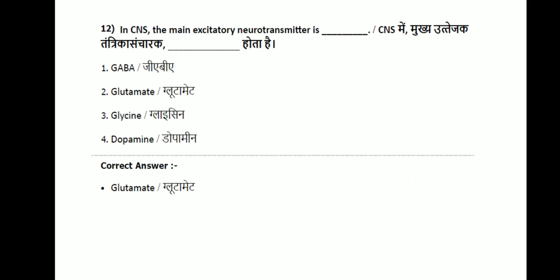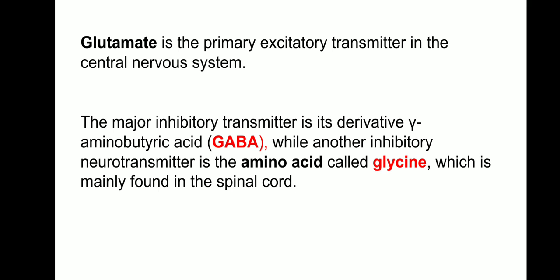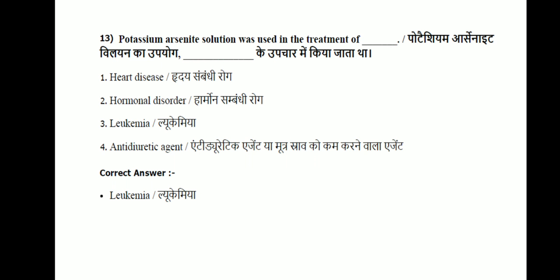Next question: in the CNS, the main excitatory neurotransmitter is what? The main excitatory neurotransmitter is glutamate. GABA — gamma-aminobutyric acid — is the major inhibitory neurotransmitter. Glycine is also another inhibitory neurotransmitter, which is mainly found in the spinal cord.